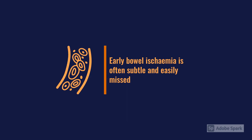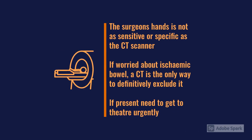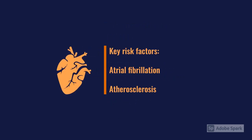Ischaemic bowel is often subtle, with pain out of proportion to clinical findings. These patients typically present with significantly raised lactates and are often very hypotensive, requiring a lot of fluid. Their abdomens are often soft with little peritonism, which appears late and is difficult to detect clinically. When you have a patient with abdominal pain, a highly raised lactate, and hypotension, a CT is needed urgently to assess bowel viability. These patients need to get to theatre urgently for resection. Key risk factors include atrial fibrillation and atherosclerotic risk factors such as smoking and hypertension.